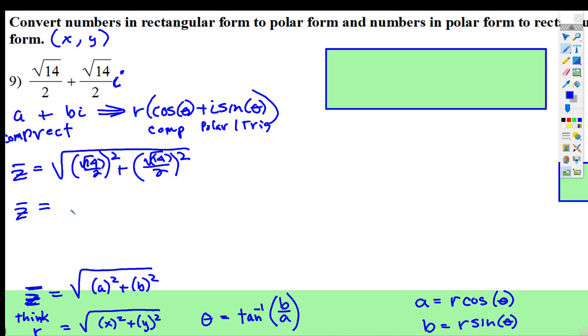Root 14 squared is 14, 14 plus 14 is 28, and then 2 squared is 4. When we take the square root of 28 over 4, I'm going to rewrite 28 as 4 times 7, that's over 4.